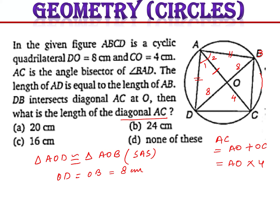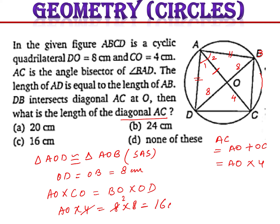Since diagonals AC and BD intersect at O, applying the intersecting chords property: AO times CO equals BO times OD. So AO times 4 equals 8 times 8, giving AO equals 16 centimeters. Therefore AC equals AO plus OC equals 16 plus 4 equals 20 centimeters. Option A is the answer. I hope all these questions are clear.